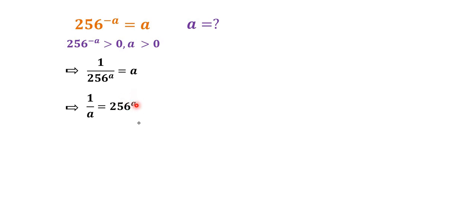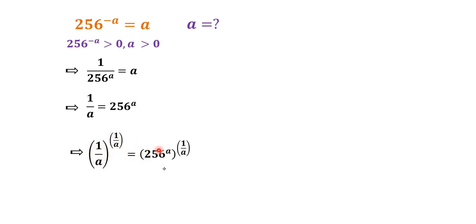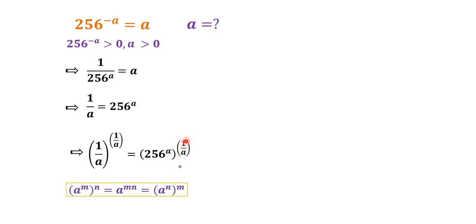We want to get rid of the exponent a, so we take the power of 1 over a on both sides: (1/a)^(1/a) equals 256^a to the power of 1/a. Applying the rule (a^m)^n = a^(m·n), the right side simplifies to 256^1, so the equation becomes (1/a)^(1/a) = 256.